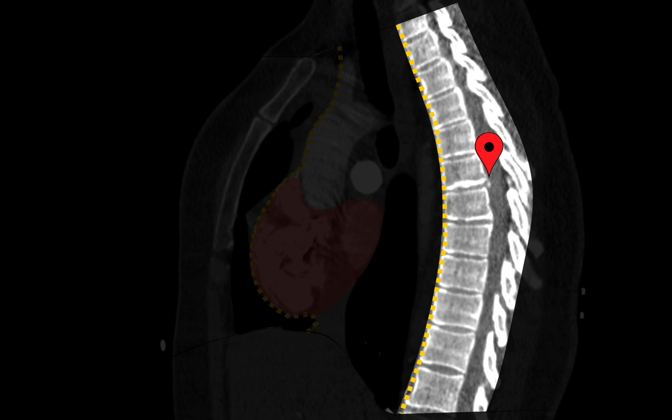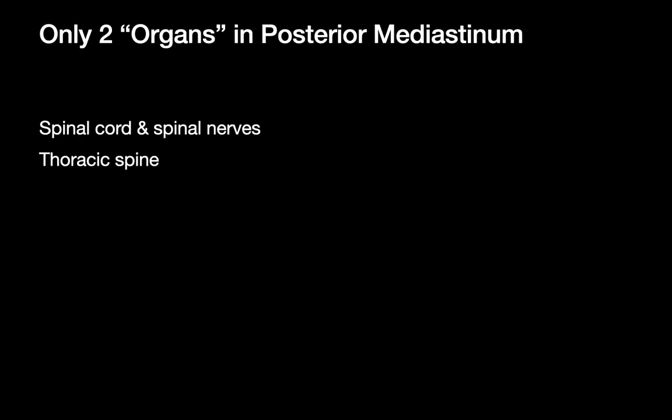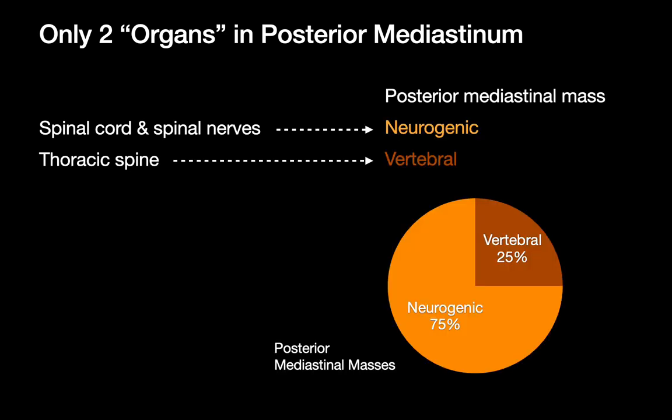The posterior mediastinum is the topic of this talk, and we'll be primarily focusing on posterior mediastinal masses. There are basically only two organs in the posterior mediastinum: the spinal cord and its spinal nerves, and the thoracic spine. Posterior mediastinal masses are therefore usually either neurogenic or vertebral. Neurogenic posterior masses are more common, and that's where we'll begin.